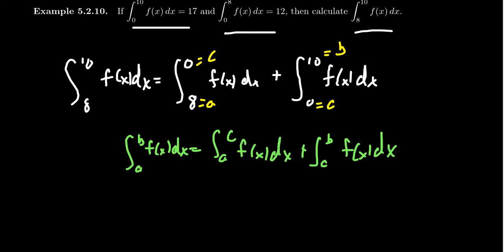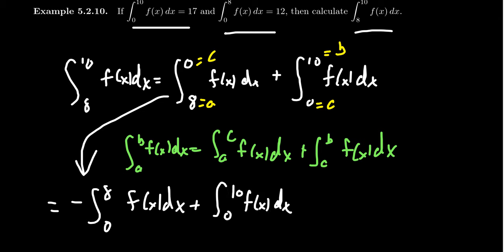That is this one right here comes down. And if we flip around the order, so we get negative 0 to 8, put the smaller one on the bottom, f of x dx plus the integral from 0 to 10 of f of x dx, like so.